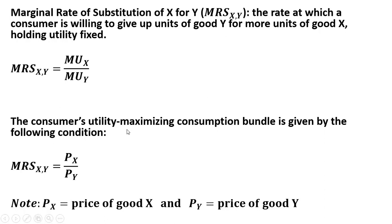The consumer's utility maximizing consumption bundle is given by the following condition, where the marginal rate of substitution equals the ratio of prices — the price of good x to the price of good y.